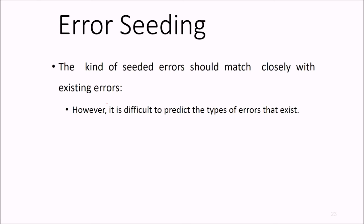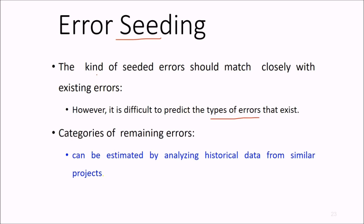This is a good way of finding it. Error seeding, this kind of seeded errors should match, not you cannot just haphazardly include errors. These errors should be as close to the existing error, but this is very difficult to predict this type of error. What could be the categories of remaining errors which are not yet been surfaced can easily be estimated by analyzing the historical data from similar projects.